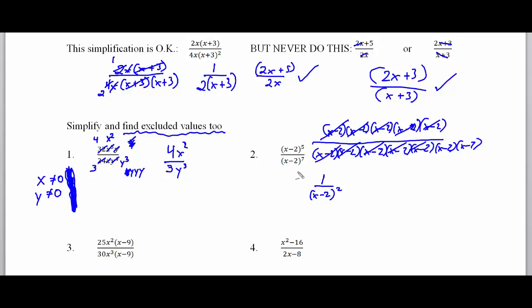This shows that u to the fifth power over u to the seventh power equals 1 over u squared — five on top and seven on the bottom leaves two on the bottom. For excluded values, we don't want x minus 2 to equal 0, so solving gives us x cannot equal 2. That's our danger number — x can be anything in the world as long as it's not 2.